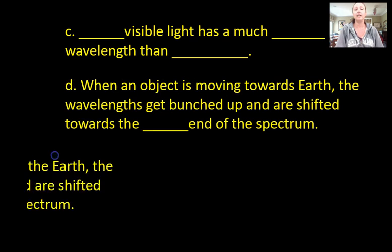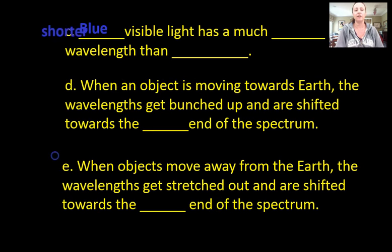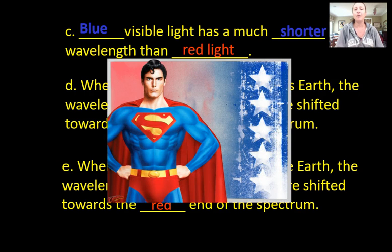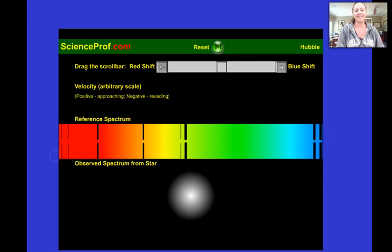So blue light has much shorter wavelength than red light. And as I just mentioned, when the object is moving towards Earth, it will get blue. And when the object is moving away from the Earth, it reaches the red end of the spectrum. I want you to remember this by thinking of Superman. If you can remember, Superman's cape is red. So if he's going away from you, then that means you see his red cape. But if he's coming towards you, then you see his blue uniform. So it's a good analogy to help you remember.